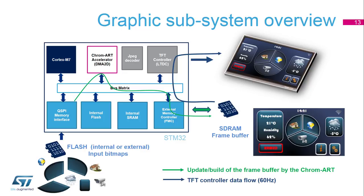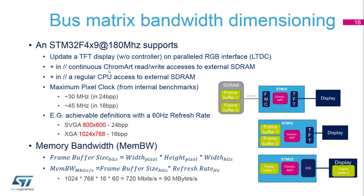That's why, at least for a complex graphical user interface, several framebuffers are used. One is sent 60 times per second all the time by the LTDC, and the other is filled by the DMA2D. When a framebuffer is ready, the two framebuffers are switched so that the new frame is displayed on the screen.